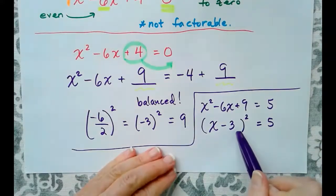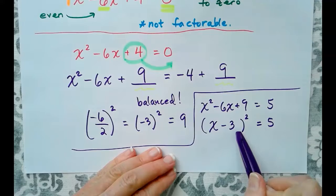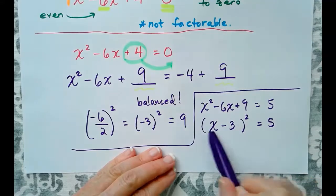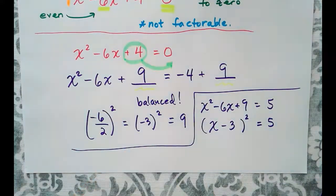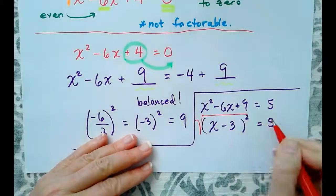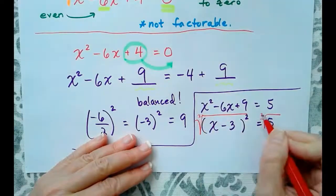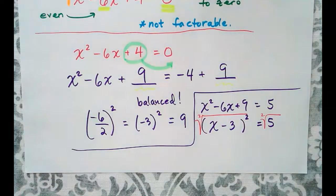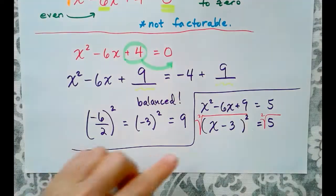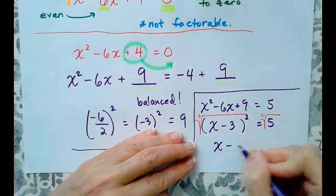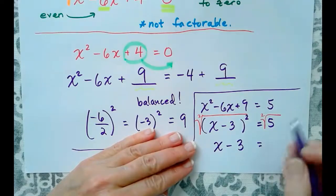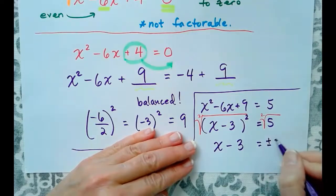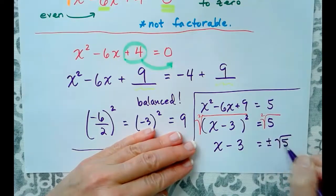So, now we can refer back to what we looked at in the last video, the square root property. Because we have an isolated squared term, I can now take the square root of both sides. The square root is going to undo the square, leaving us with x - 3 equals the square root of 5, which is plus or minus the square root of 5.